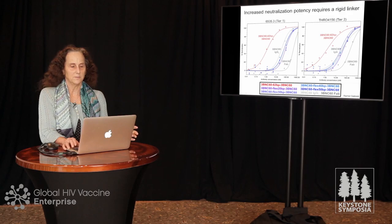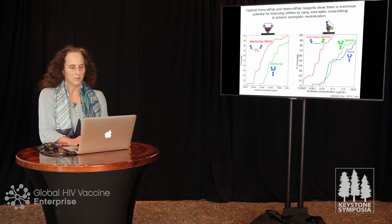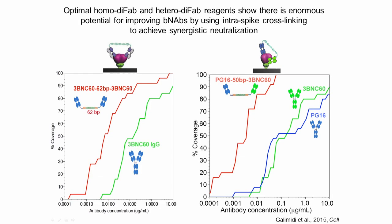We can also make what we call heterodifabs. We linked 3BNC60 to PG16, an antibody that binds to the apex of the trimer, so it binds to two different epitopes on the trimer. The coverage curve across at least 25 viral strains shows it's two orders of magnitude on average more potent than either parent antibody, 3BNC60 or PG16. This is particularly interesting because close relatives of both antibodies are currently in clinical trials in humans.